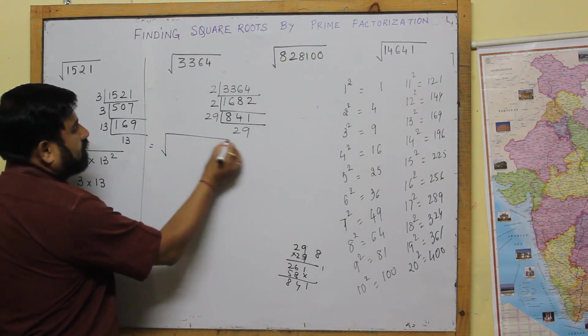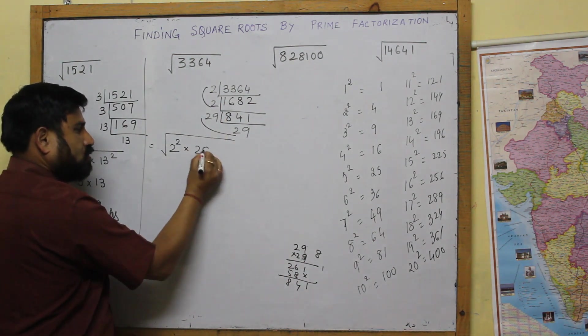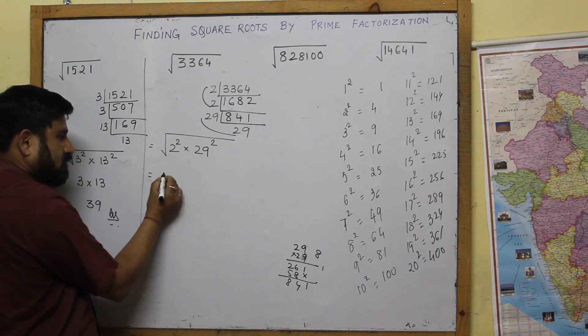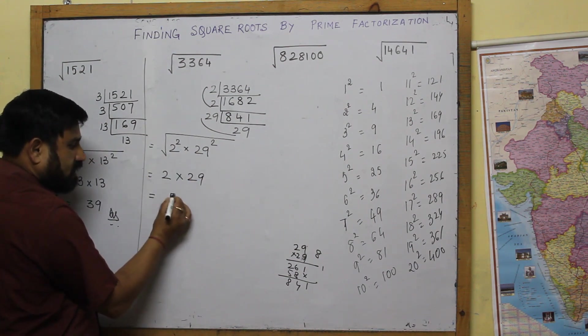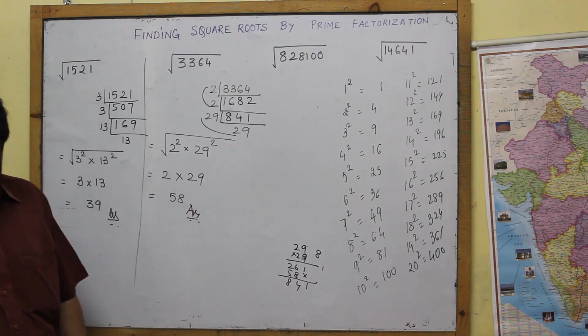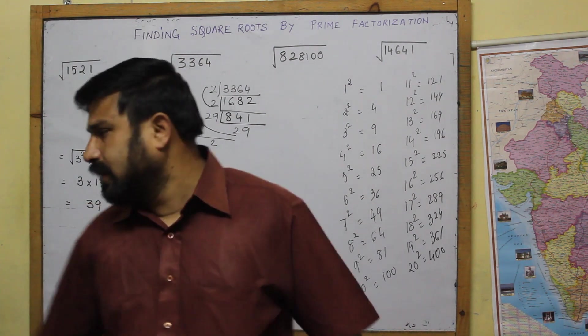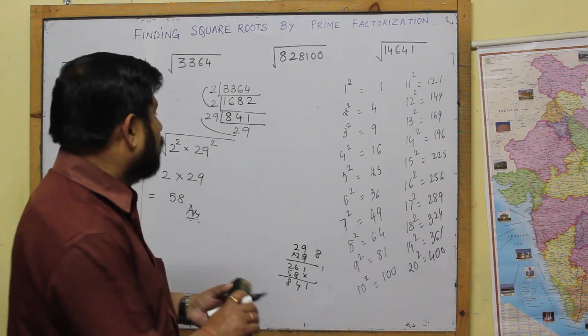So 3364 can be written as 2 square into 29 square. Since this is a square, 2 comes from here, 29, so what is the answer to it? The answer is 58.